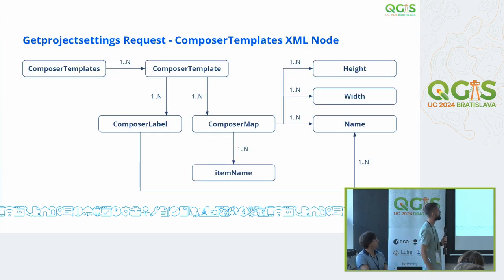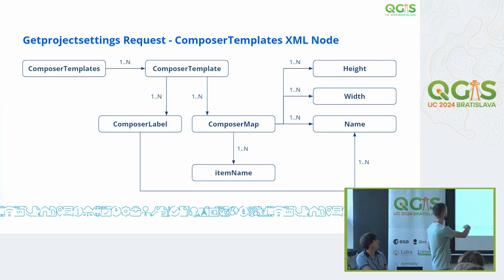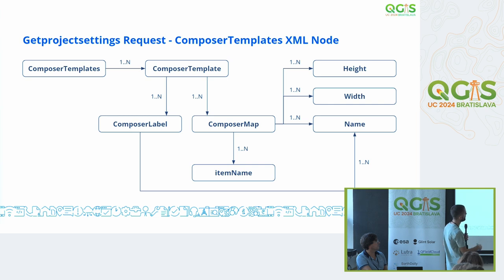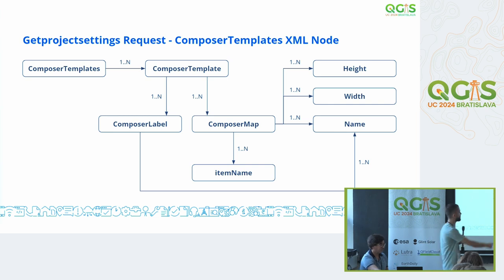This is a representation of what the node has. The composer templates node can have many templates, as many as you wish. It can have many labels, which have their own name. The map, which has an item name, a height, a width, and a name. This should be one-to-one right here.